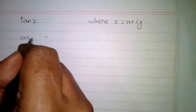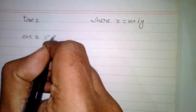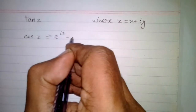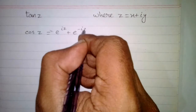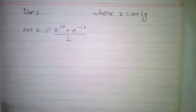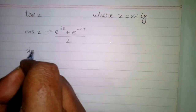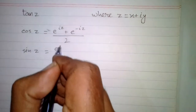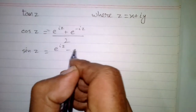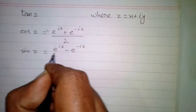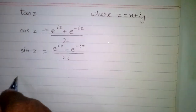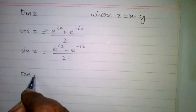In this video we will find the tangent of a complex number z, where z is equal to x plus iota y. First of all, we know that cos(z) is equal to e to the power iota z plus e to the power minus iota z upon 2, and sine of z is equal to e to the power iota z minus e to the power minus iota z upon 2 iota.